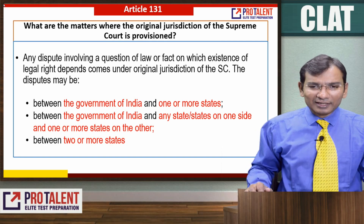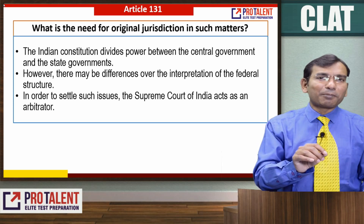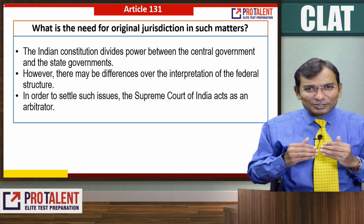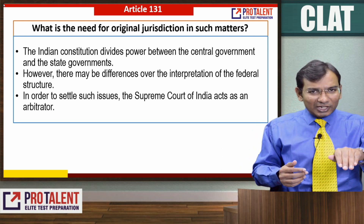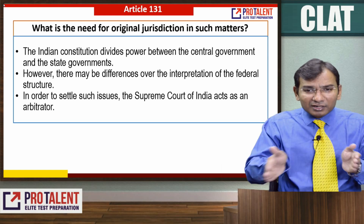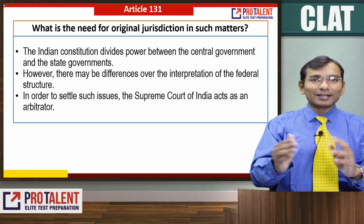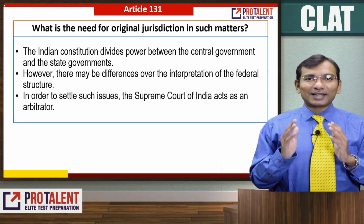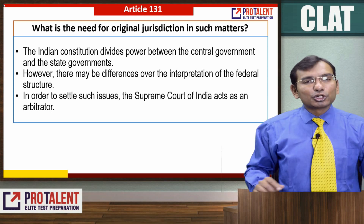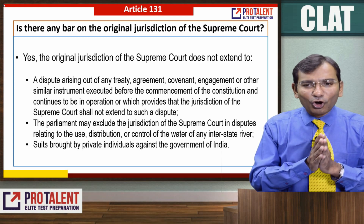So the original jurisdiction of the Supreme Court under Article 131 is essentially about disputes between governments — central government and state government, or between state governments. What is the need for this original jurisdiction? The Indian Constitution understands that in our federal structure — India is a quasi-federal country where the center has some power and states have some power — this division of power can bring problems. To handle such disputes, the Supreme Court acts as an arbitrator.